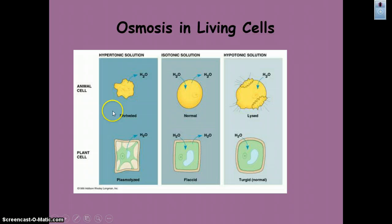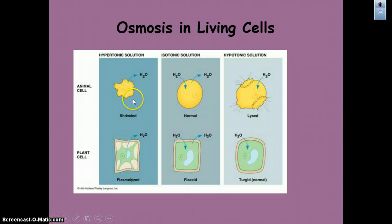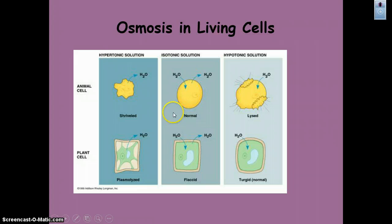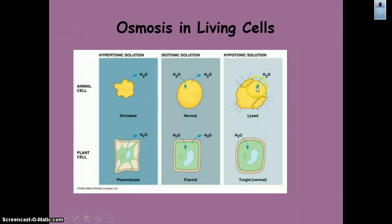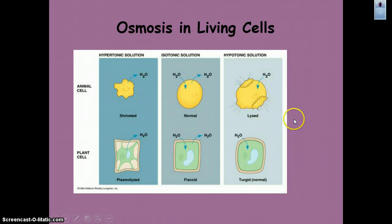Looking at plant and animal cells — focusing on the animal cells — in a hypertonic solution there's less water concentration outside, so water moves from greater to lesser concentration out of the cell, and the cell shrivels. In an isotonic solution, water moves back and forth equally and you won't see an overall change in the cell. In a hypotonic solution, water concentration is greater outside, so water moves into the cell — this is called lysis, where the cell can actually explode if the water pressure gets too great trying to equalize.